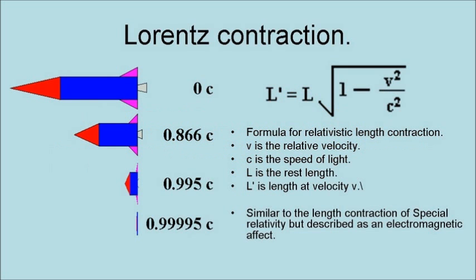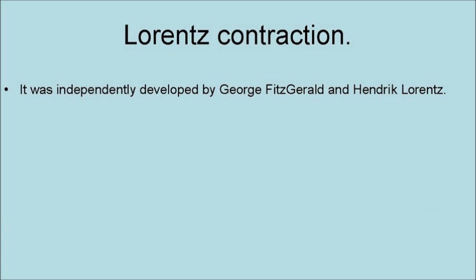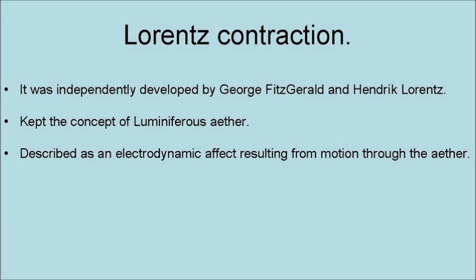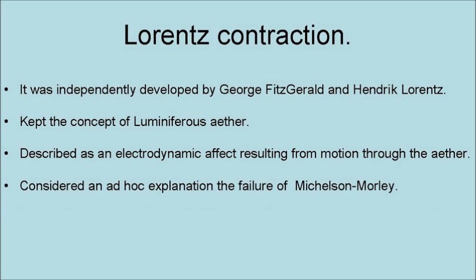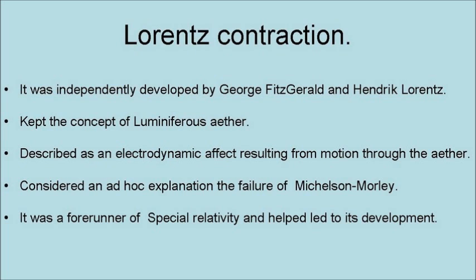The first proposed solution is known as the Lorentz contraction. It is similar to length contraction of special relativity, but described as an electromagnetic effect. The degree of length contraction exactly counters the expected variation in the light travel time. It was independently developed by George Fitzgerald and Hendrik Lorentz. It kept the concept of luminiferous ether, but described it as an electrodynamic effect resulting from motion through the ether. However, it was considered an ad hoc explanation for the failure of Michelson and Morley. It was a forerunner of special relativity and helped lead to its development.